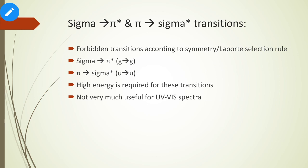Sigma to pi* and pi to sigma* transitions are absolutely forbidden according to the symmetry or Laporte selection rule. Sigma to pi* is a g to g transition and pi to sigma* is a u to u transition — neither satisfies the required change in parity. Moreover, the energy gap between sigma and pi*, and between pi and sigma*, is larger, so the energy required is higher. Therefore, these transitions are also not useful for UV-visible spectra.